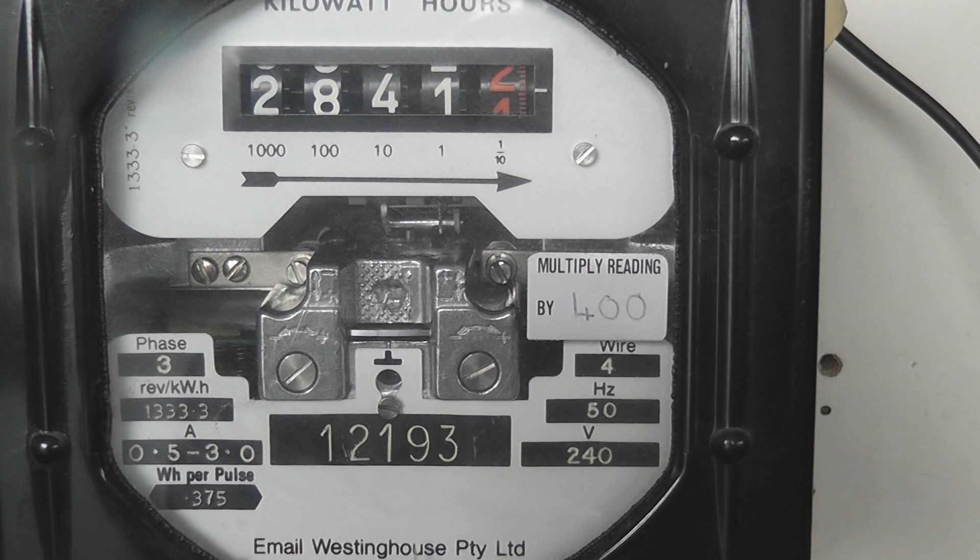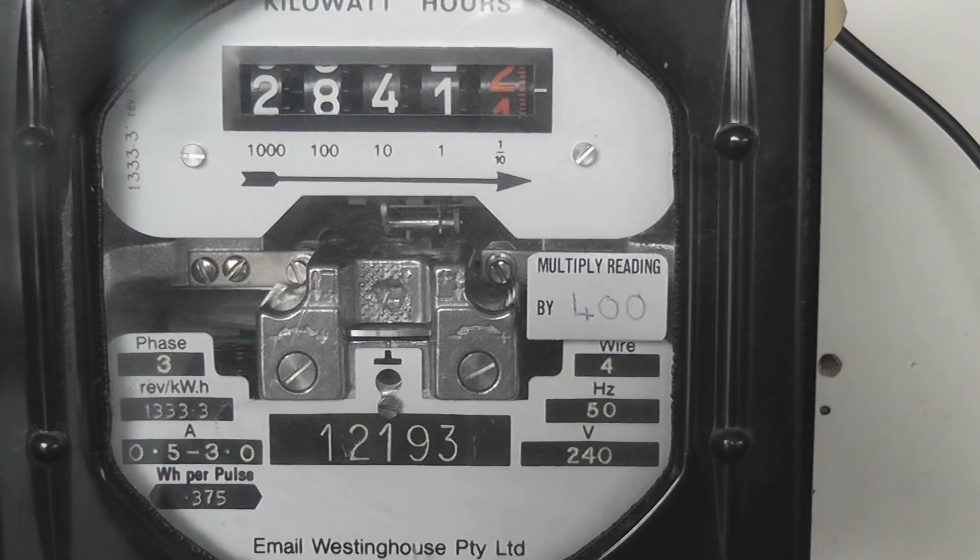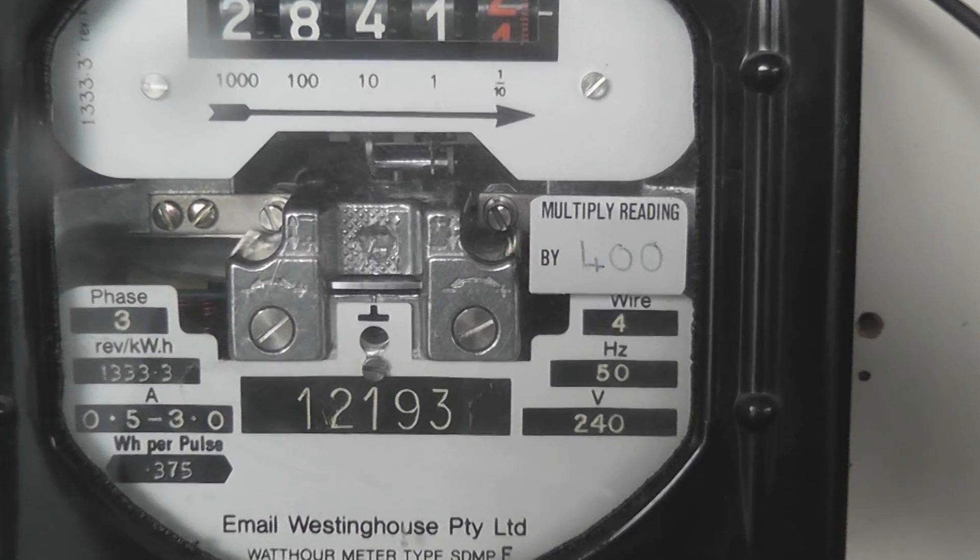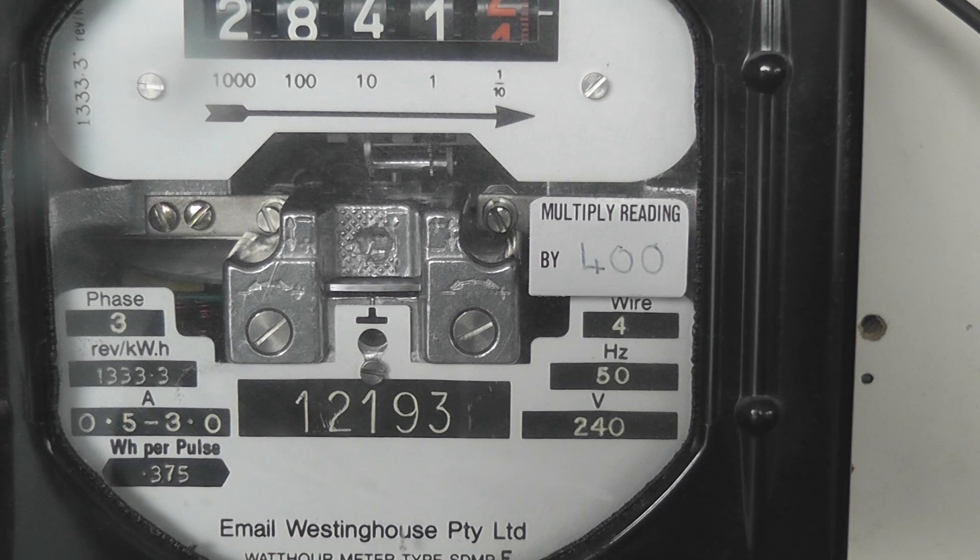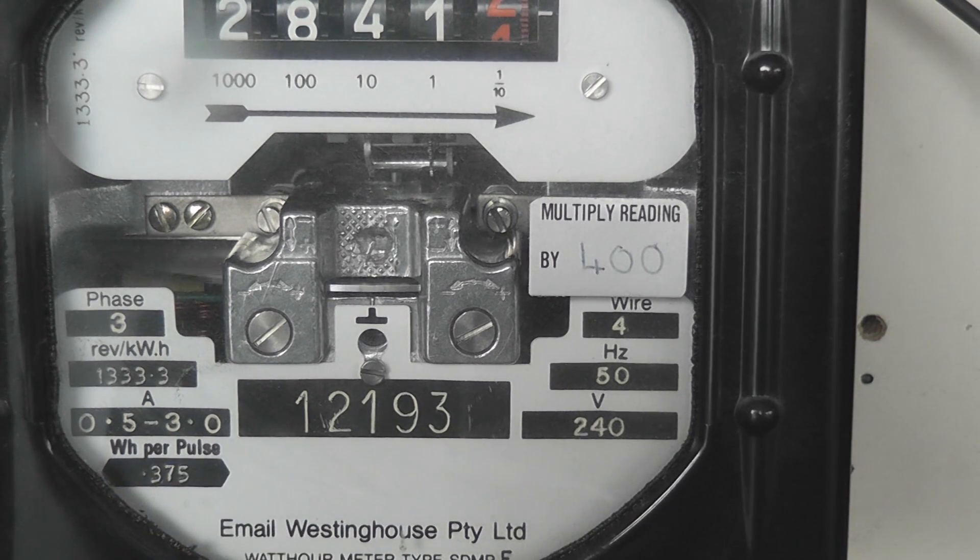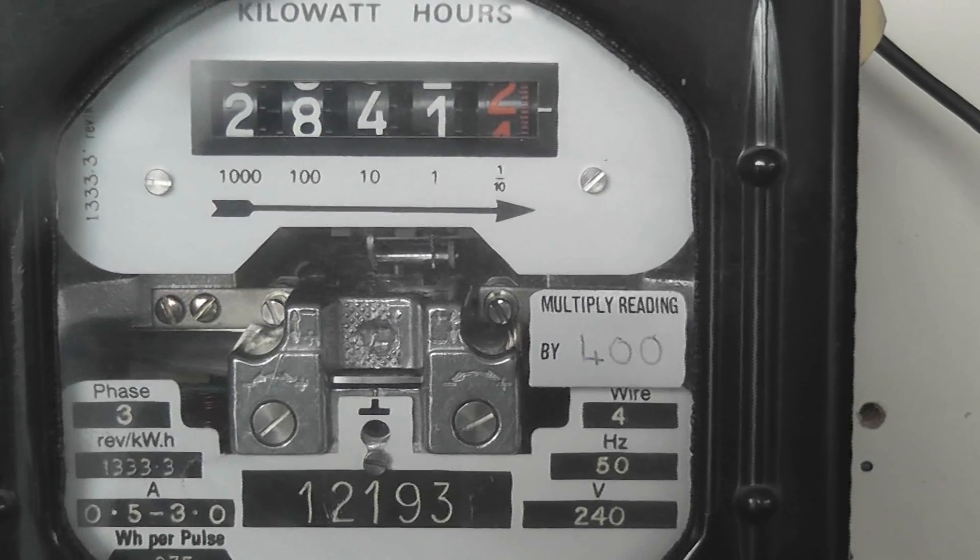These meters are Email Westinghouse type SDMP. P stands for precision and it is quite cool because these meters are rated between 0.5 and 3 ampere and got a meter speed of 1333.3 revolutions per kilowatt hour, nice high speed. 3 phase CT rated and they're running very nicely.